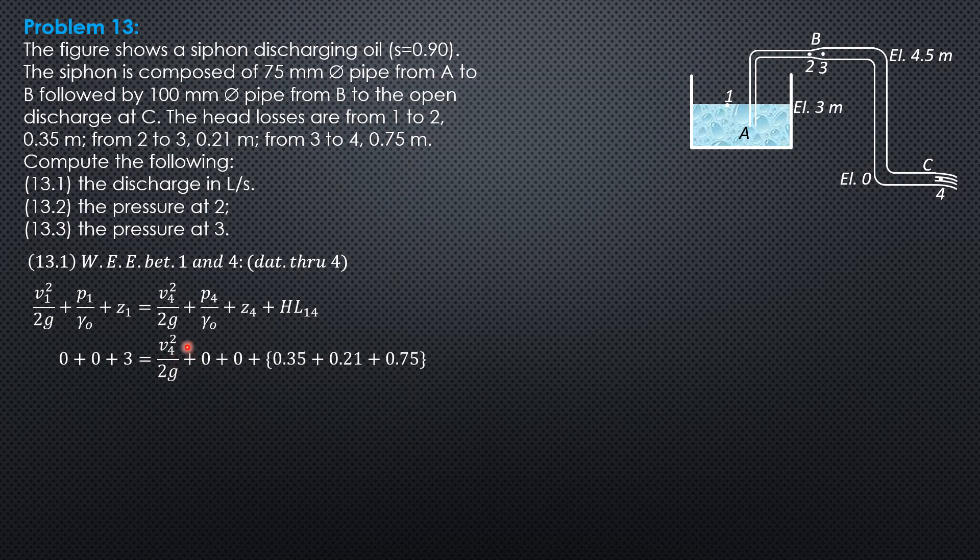From here, we can solve velocity head at 4, which is also equal to the velocity head at 3 because we have the same diameter. Velocity head at 4 equals velocity head at 3 equals 1.69m. From there, we can solve the velocity at 4 or 3: 5.758 meters per second.